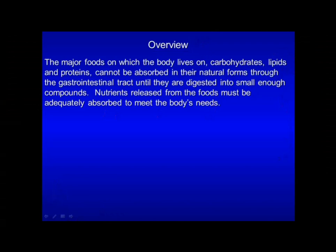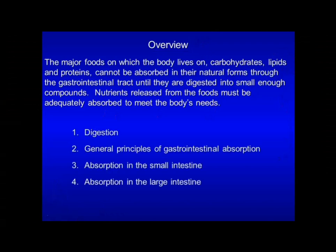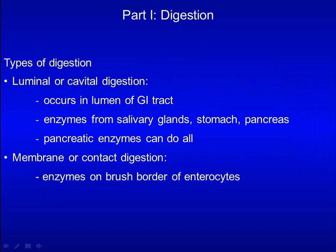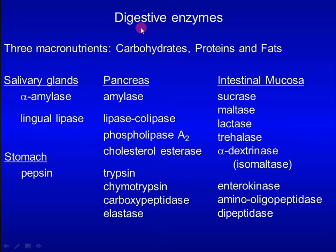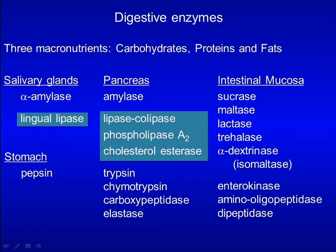Today we will cover four topics. First, we will look at digestion. There are two major types of digestion: luminal digestion and membrane digestion. Luminal digestion occurs in the lumen of the gastrointestinal tract. Membrane digestion is catalyzed by enzymes on the brush border of enterocytes. Here are the digestive enzymes. Among them, enzymes that digest lipids are shaded in green, and enzymes that digest proteins are shaded in orange.